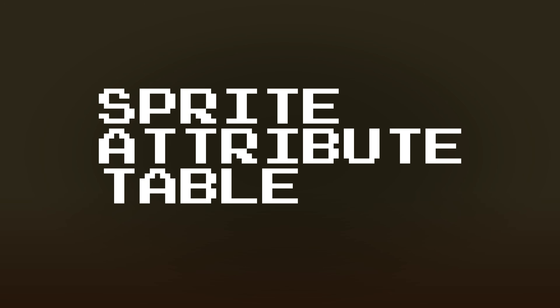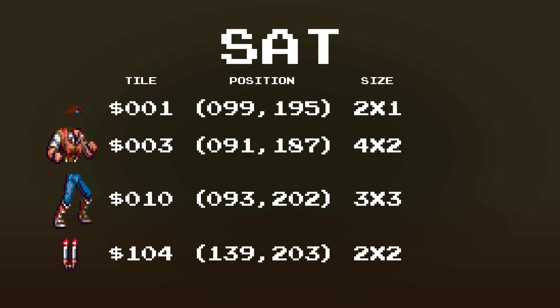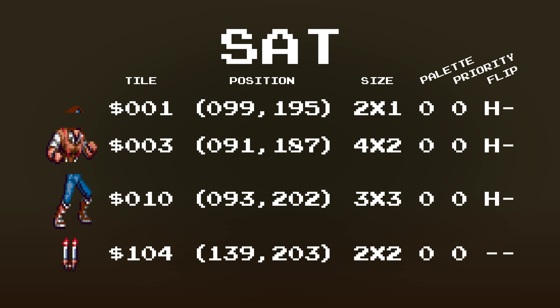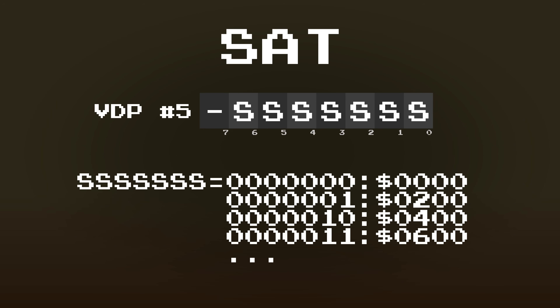It does this by creating two separate sprite attribute tables. A sprite attribute table, or SAT, is a data structure that can be found in the VDP's video RAM that lists every single sprite that is currently on the screen, along with its properties like position, size, palette, priority, and horizontal and vertical flipping. There is a special register in the VDP that keeps track of where in video RAM the SAT is located. Generally, the SAT doesn't move, so this value is set once and not touched very often.